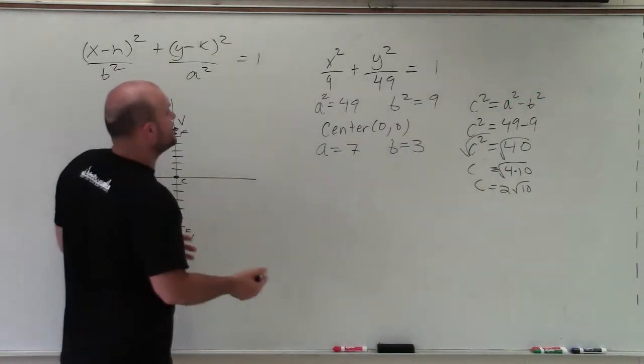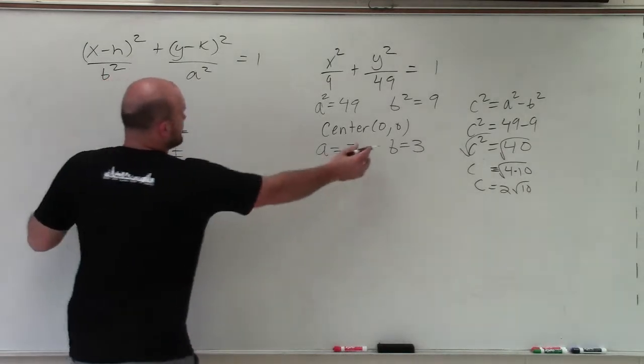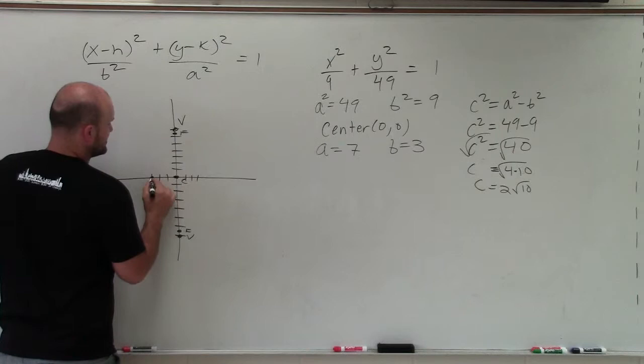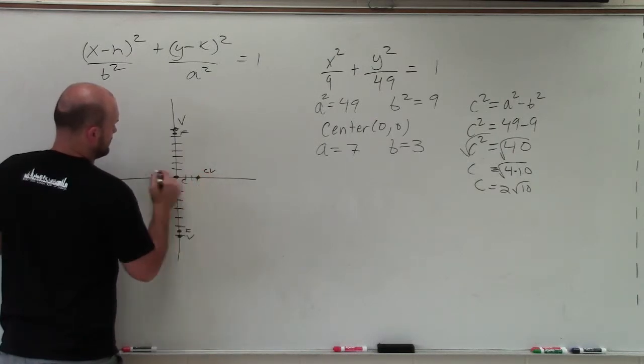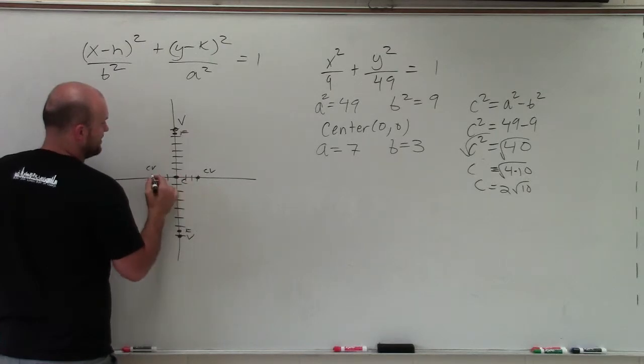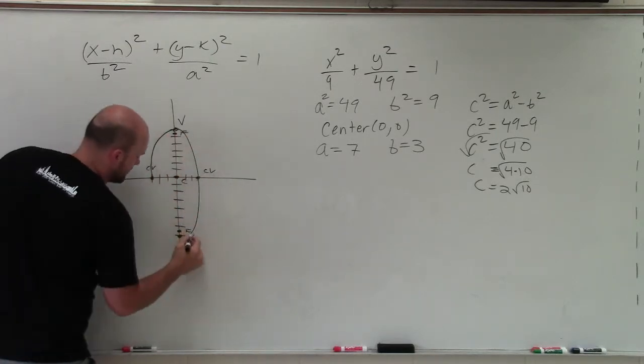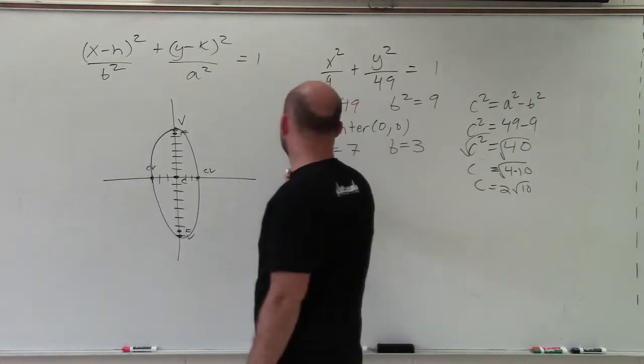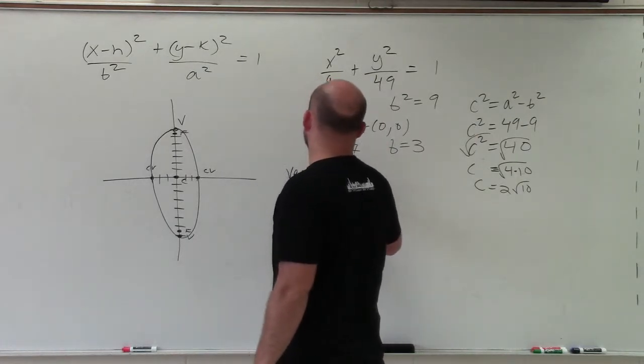And then the last thing I need to do is determine the covertices, which has a distance of 3 from the center. So I just go right and left. Notice how the covertices are on the minor axis. And now I can just connect. So the main important thing is we already wrote on the center. We want to write in our vertices.